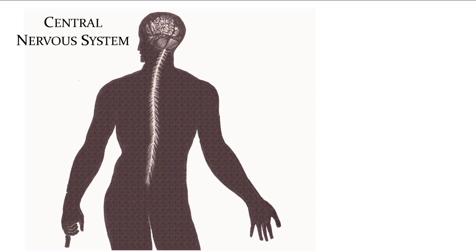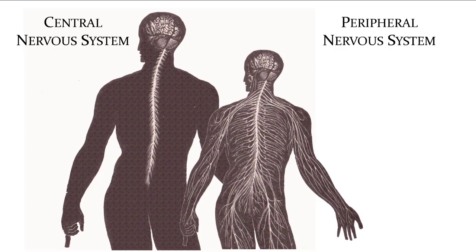The nervous system begins and ends with the central nervous system, which consists of the brain and spinal cord. Nerves or neurons coming off the brain and spinal cord, traveling out to the body, are part of the peripheral nervous system. The peripheral nerves not only send signals out to our body but also relay sensory information back to the brain. There are two main categories of the peripheral nervous system.